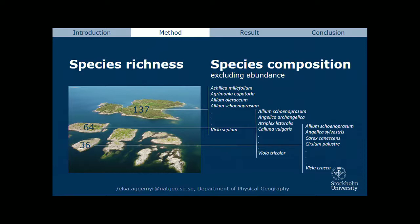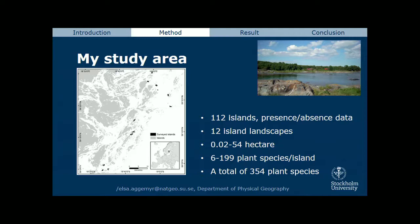My study area is in the outer archipelago of Stockholm — 112 islands divided into 12 different island landscapes, ranging from 0.02 hectares up to 54 hectares. I found between 6 and 199 plant species per island, and a total of 354 plant species — quite many for the outer archipelago.